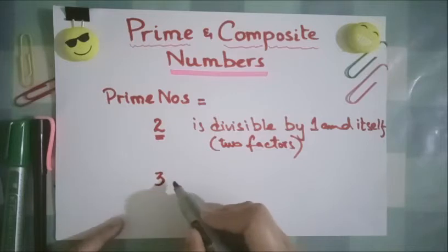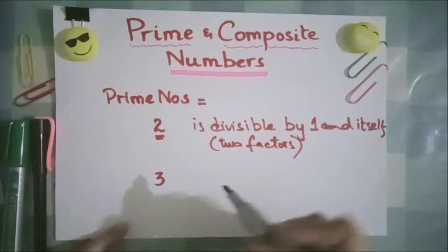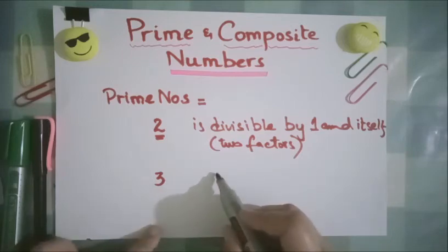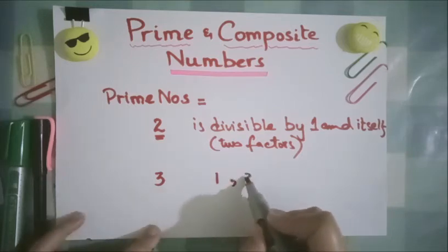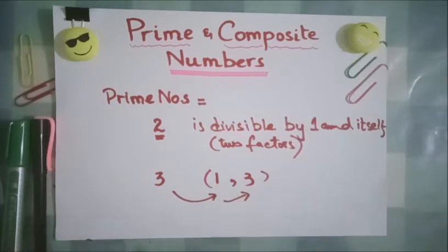at 3, three is not coming in any table. It is not divisible by any number other than 1 and the number itself, 3. So it has also only two factors. So it means that prime numbers are those numbers